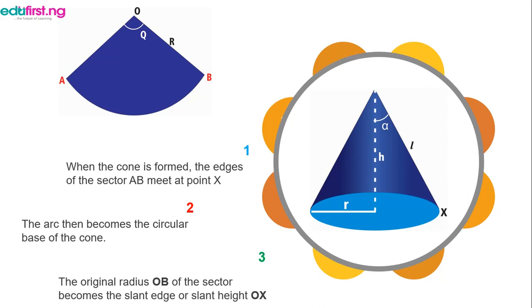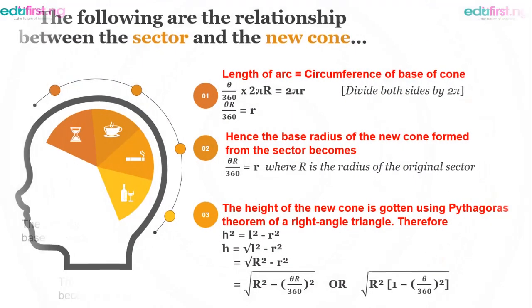Also note that the original radius, capital letter R, of the sector becomes the slant edge or slant height. So, you have to do an imaginative analysis here. So, you must all note this.